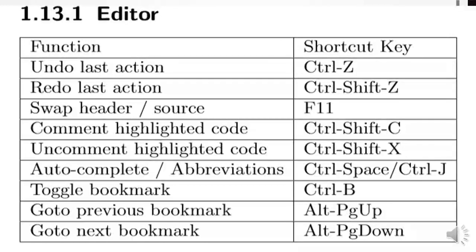This is the editor section of Code::Blocks. These are the functions and the shortcuts you can use. If you want to undo, you can press Ctrl+Z. Ctrl+Shift+Z comments highlighted code. These are very important — I use them often. I don't have to go to Edit or File to do any of them. To toggle your bookmark, use Ctrl+B. You can go to the next bookmark using Page Down.